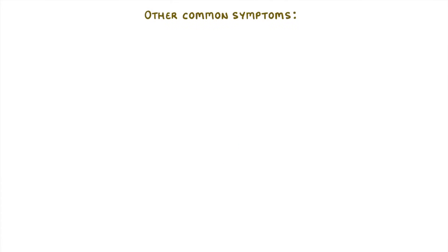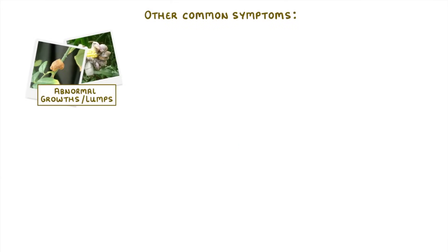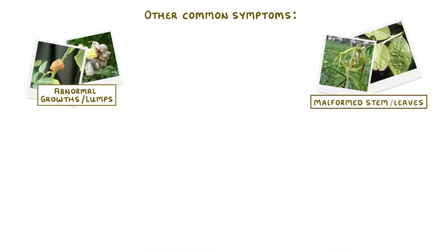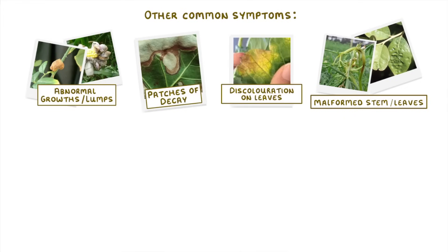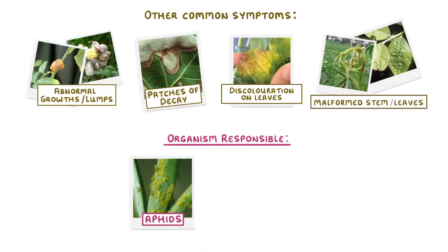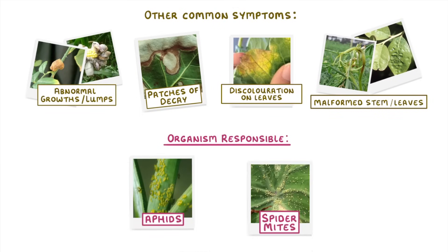Some other symptoms that diseased plants might have include abnormal growths or lumps, malformed stems or leaves, patches of decay, or spots of discolouration on their leaves. In some cases, you might even be able to see the organism responsible, particularly if they're fairly big, like aphids or spider mites.